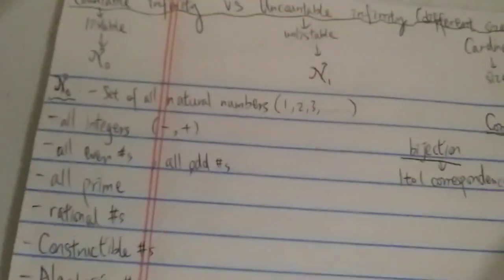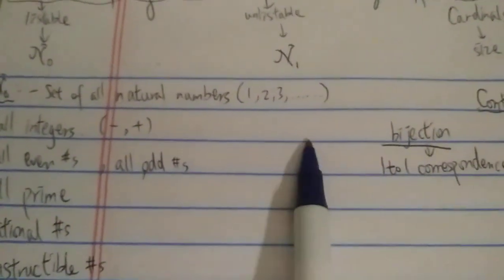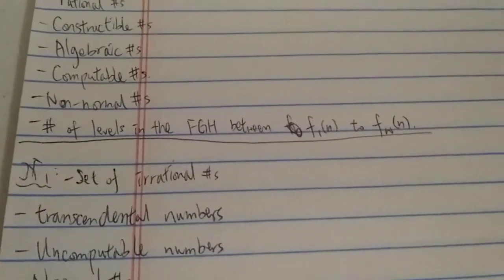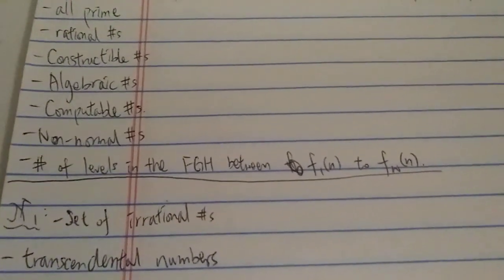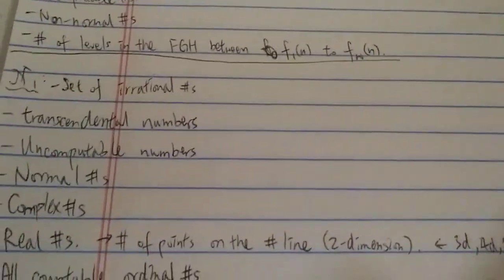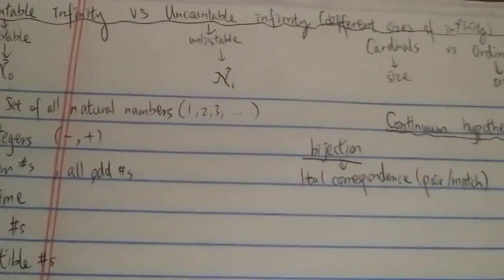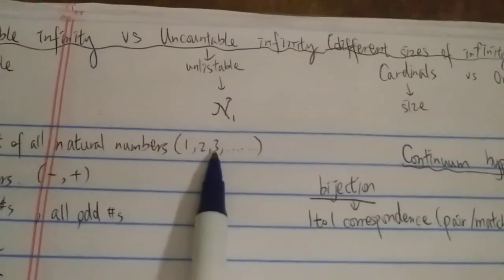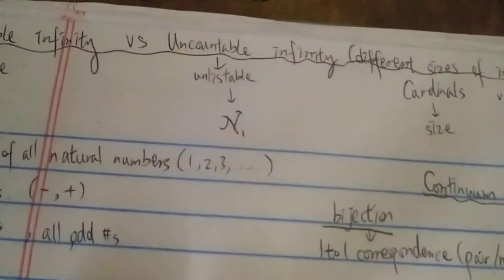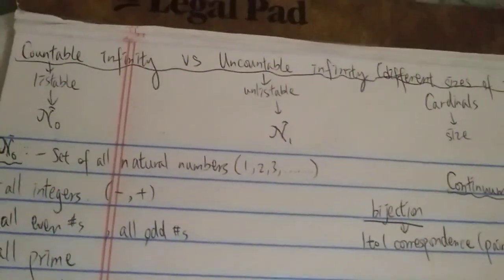One reason why ℵ₁ is much bigger than ℵ₀, and why it's unlistable, is this: imagine the number line. Between any two points on the number line, there are infinitely many numbers — infinitely many decimal numbers. Therefore, the total number of real numbers is infinitely bigger than just the integers. For example, between 1 and 2 there are infinitely many decimals, and even between 1.1 and 1.2 there are infinitely many. That's why you can never list them — it's uncountable infinity, infinitely bigger than ℵ₀.